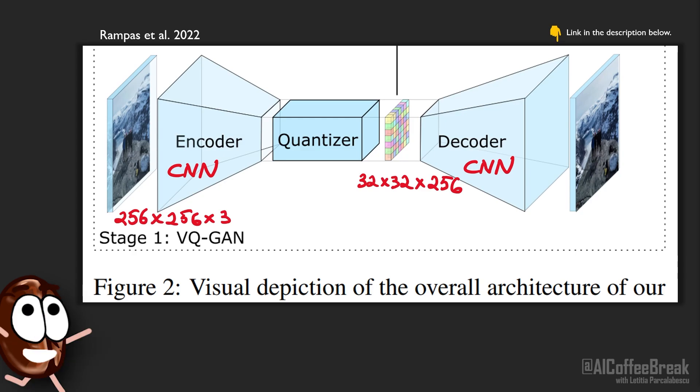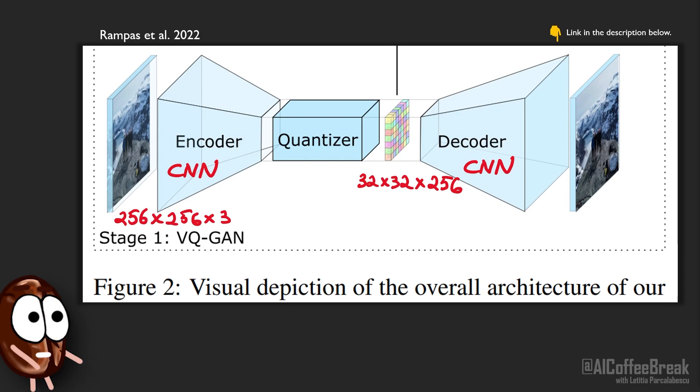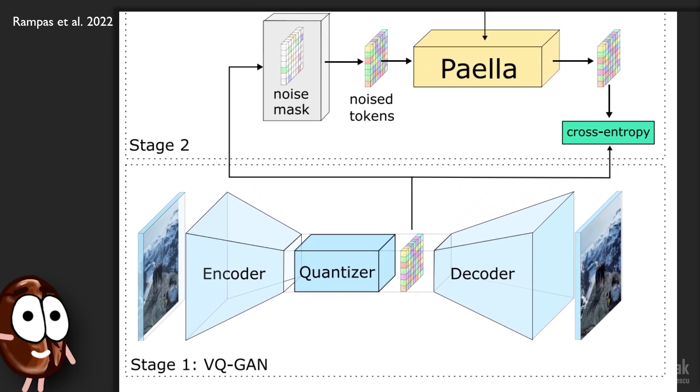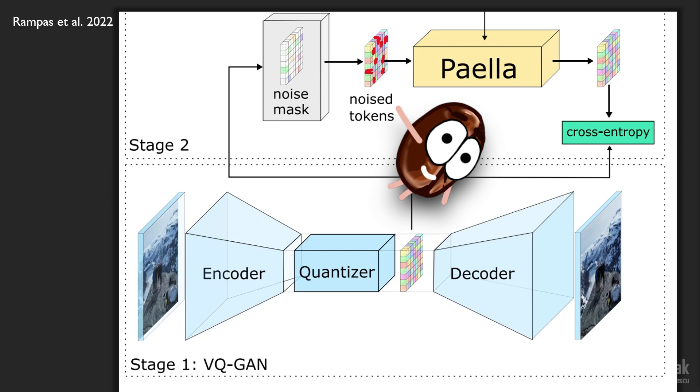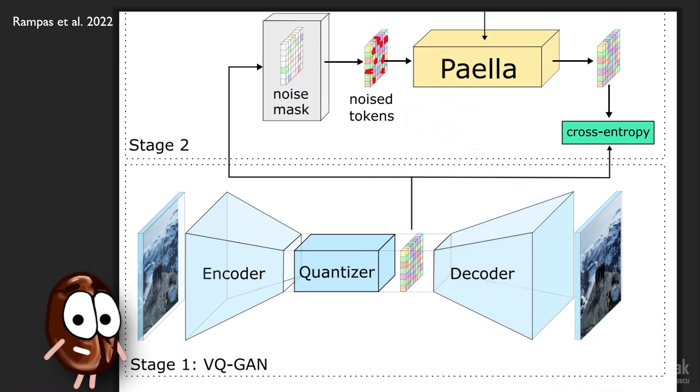Now, we have a way to represent each image in a learned codebook, so in a meaningful lower dimensional representation. How to generate images from text using this codebook? The authors take the codeword of an image and noise out a fraction f of the 256 small matrices, so image tokens, representing it.